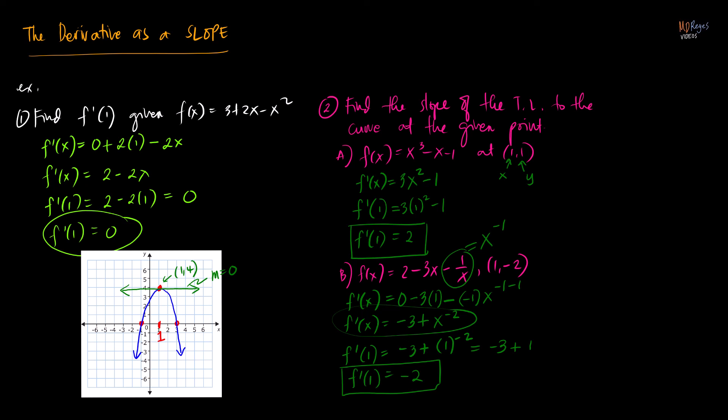In summary, when we evaluate the first derivative of a function at a specific value of x, we are finding the slope of the line tangent to the curve at that given value of x.